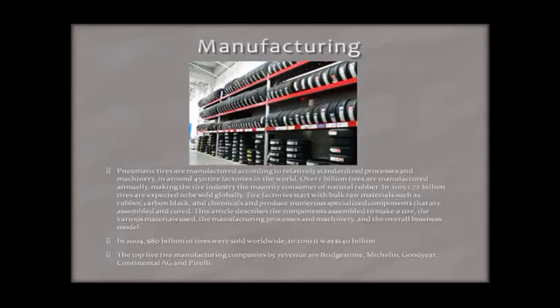Tire factories start with bulk raw materials such as rubber, carbon black, and chemicals, and produce numerous specialized components that are assembled and cured. This article describes the components assembled to make a tire, the various materials used, the manufacturing processes and machinery, and the overall business model.